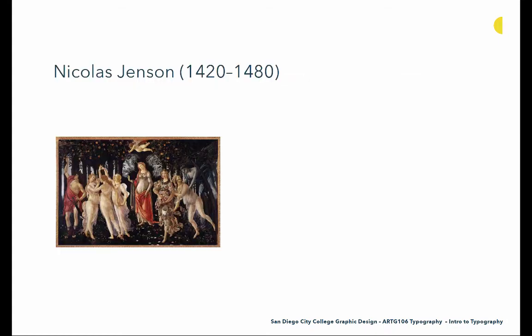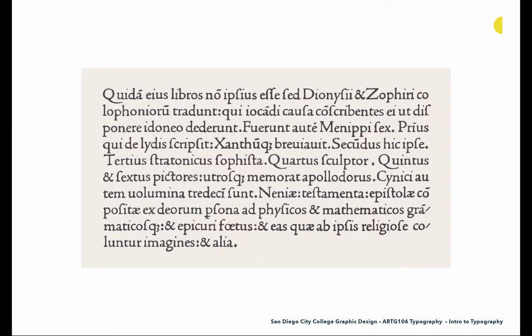Let's get into some of the people who created type. We'll start with Nicholas Jensen, who worked in Venice from 1420 to 1480. Throughout these slides I'll often reference a piece of art history as a context point — this is Botticelli's Primavera, painted during Jensen's lifetime. Originally a goldsmith, Jensen was sent to Mainz, Germany to study type production, learned with Gutenberg and contemporaries, and then returned to Italy to build some of the most gorgeous Roman-style typography we know of. He was one of the first non-German typographers, helping take the craft to Italy.